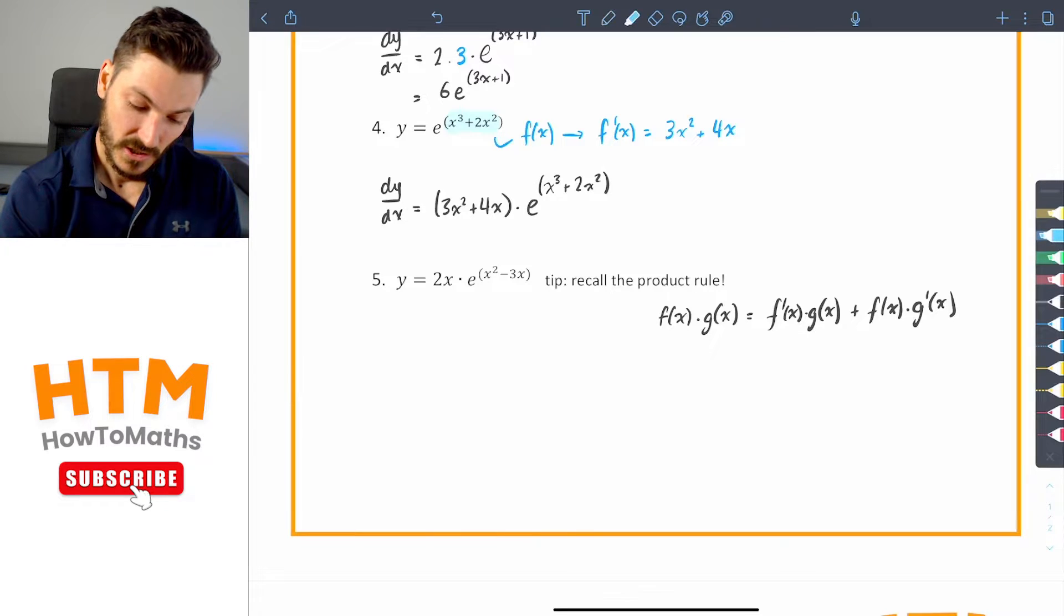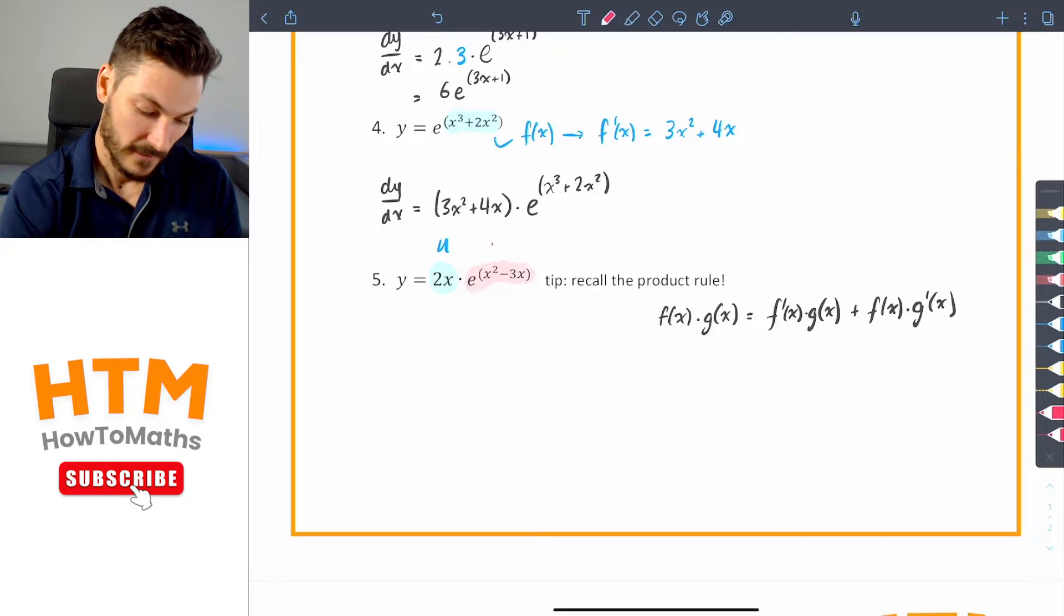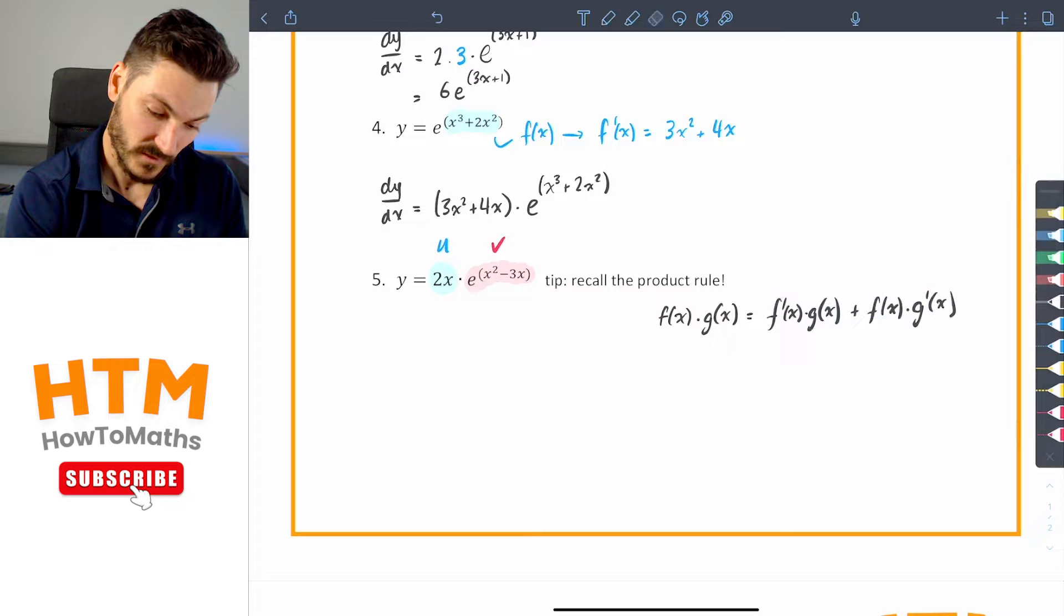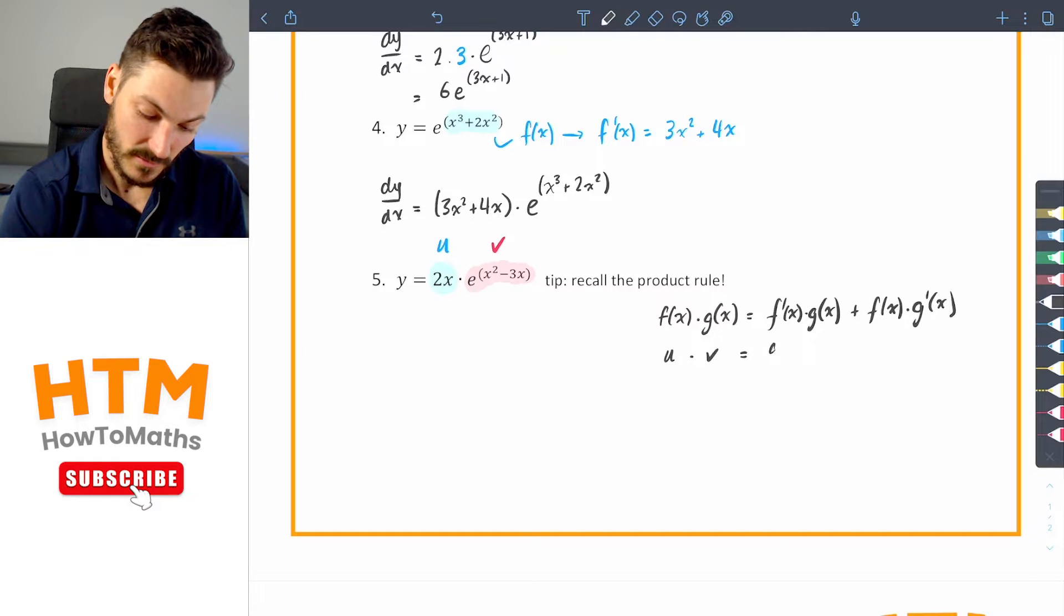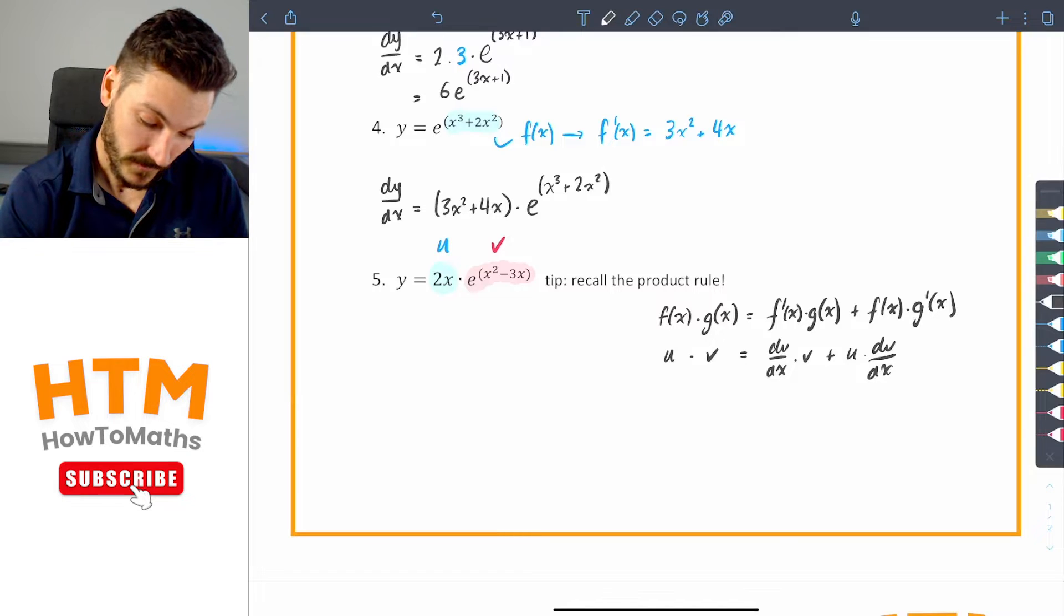But let's have a look here. So we've got function one. This is the notation I usually use. I'll call this u. And in red or pink here, I'm going to call this function v. So the notation that I usually use, if we've got, I'll keep this one here, I'll rewrite it as u times v. It's going to be du dx times v plus u times dv dx. Either one, whatever you like.